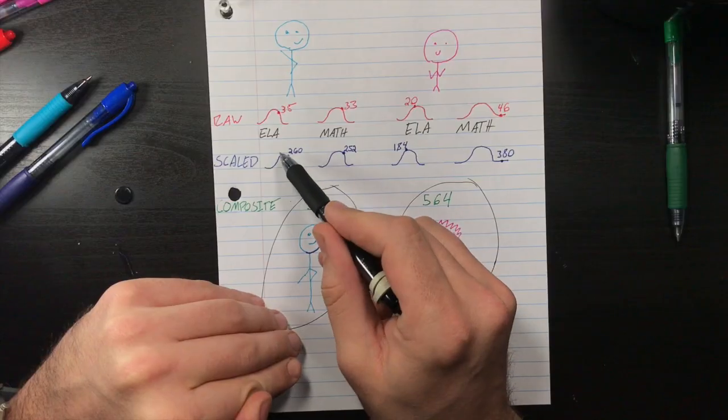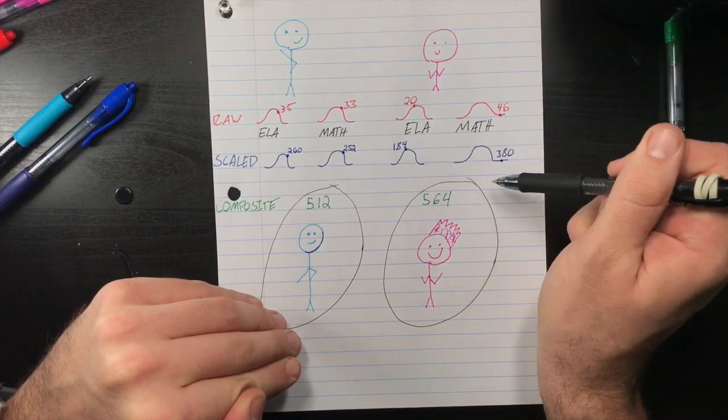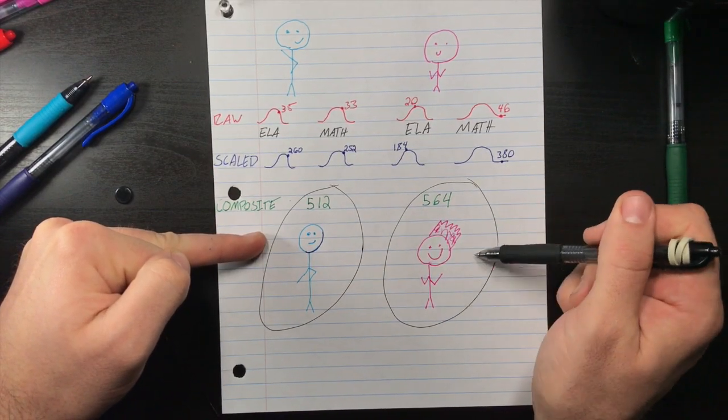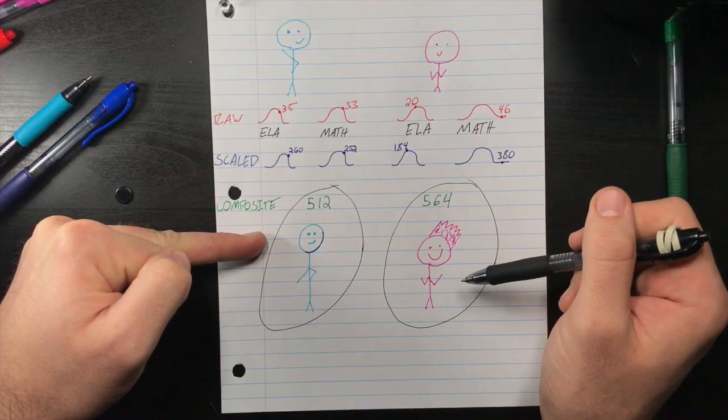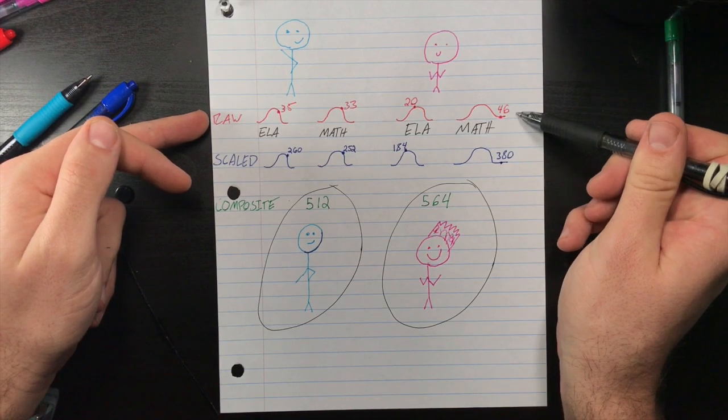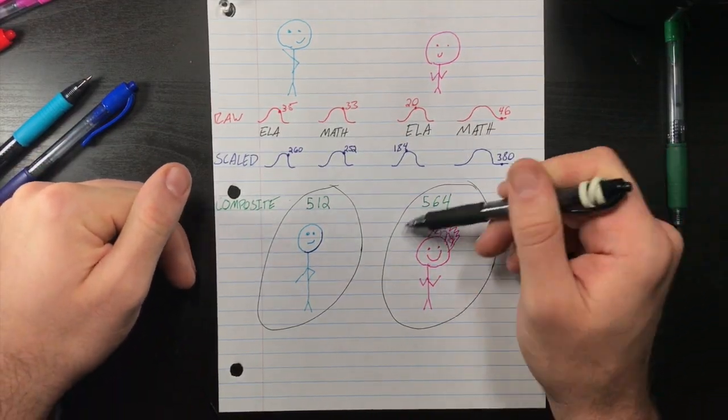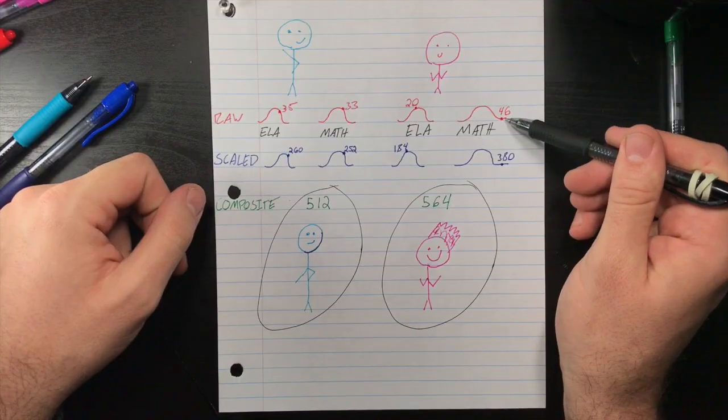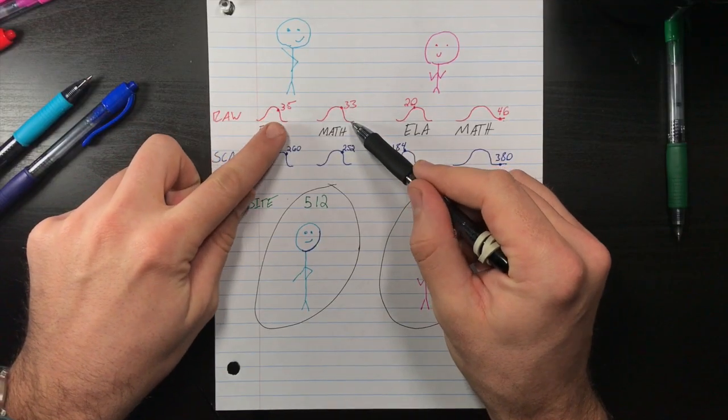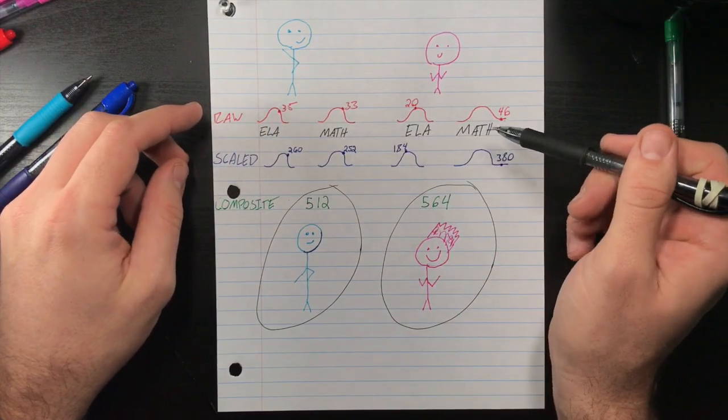The scaled score would then be 260 for Philippe's ELA and 252 for Philippe's math, where the scaled score for Maestro is 184 for ELA and 380 for math. When you combine these scores, Maestro has a 52 point advantage even though he answered less questions correctly total, 66 questions correct, and this is 68 questions correct total. Philippe gets the lower score, Maestro gets the higher score because he's taking advantage of getting those last very high value questions correct, whereas Philippe never gets enough correct to really get into that high question bonus point phase in the section.